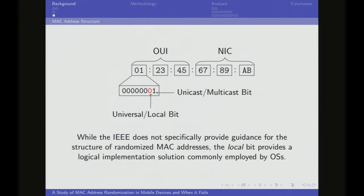Just some background on the structure of a MAC address: in the first byte, the second least significant bit is the local/universal bit. If that bit is flipped, it's used for locally assigned purposes. Our intuition was that randomized MAC addresses would have this bit flipped, and that was our original premise and where we started looking at randomization.